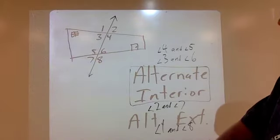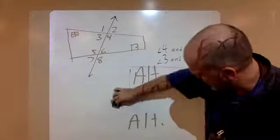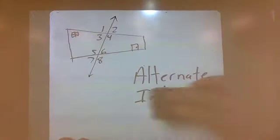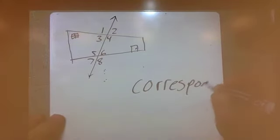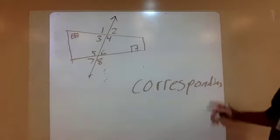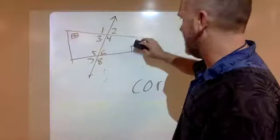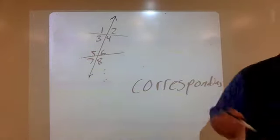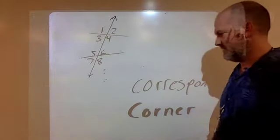That's alternate interior and alternate exterior. Now we have to move on because there are two more vocabulary words you need to know about pairs of angles. These are called corresponding angles. I'm going to erase our house for this one — we're just back to two lines with a third line called a transversal crossing them. I'm going to use a different analogy for corresponding, and it's going to be the word corner, because corner and corresponding both start with C-O-R.